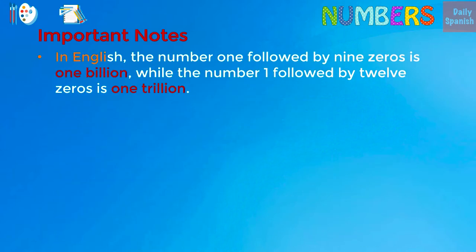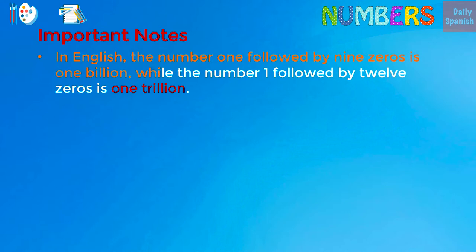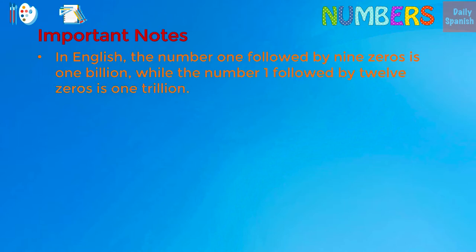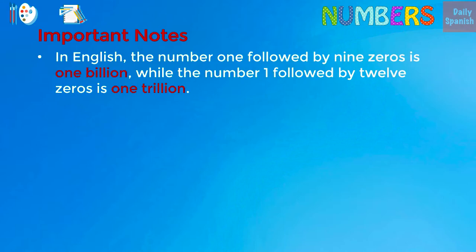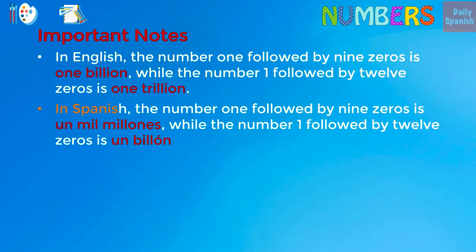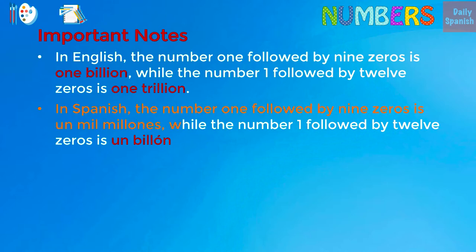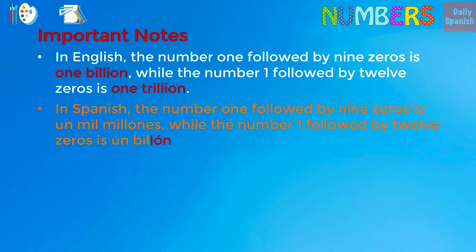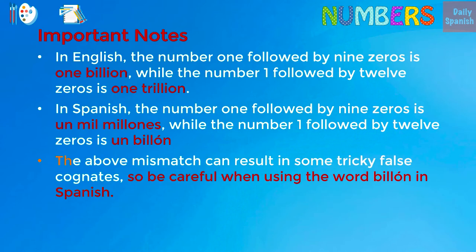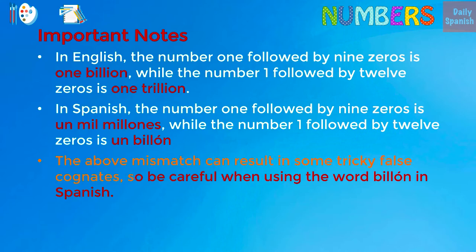Important notes. In English, the number 1 followed by 9 zeros is one billion, while the number 1 followed by 12 zeros is one trillion. The above mismatch can result in some tricky false cognates, so be careful when using the word billón in Spanish.